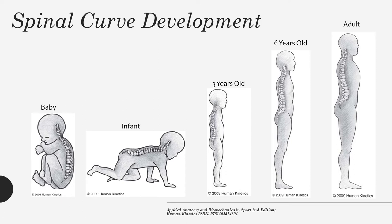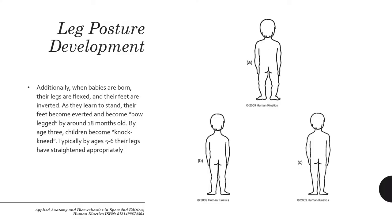You can see the well-defined thoracic curve in the baby and the smaller sacrum curve. As the infant develops, you see the cervical curve appear. By three years of age, the S-shape is taking shape, and by six years and into adulthood it becomes more defined. There's also additional development of leg posture.